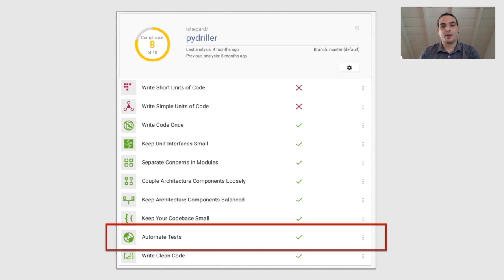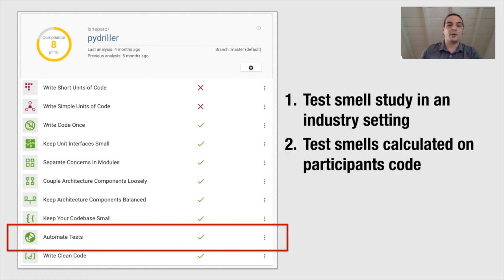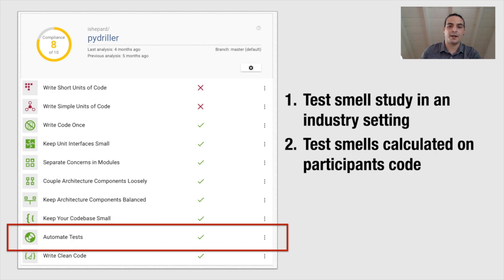By doing so, we can run a test smells study in an industry setting. Indeed, not only is Better Code Up an industry tool, but it is also used by practitioners to calculate quality metrics on closed source code. Secondly, we can measure test smell instances on participants' code. Previous studies on test smells were mainly run in a lab setting, meaning that test smells were measured on a manually created piece of code and then participants were asked to find problems or give it a read. However, since Better Code Up connects to your GitHub account, we can measure test smells directly on the participant's code.